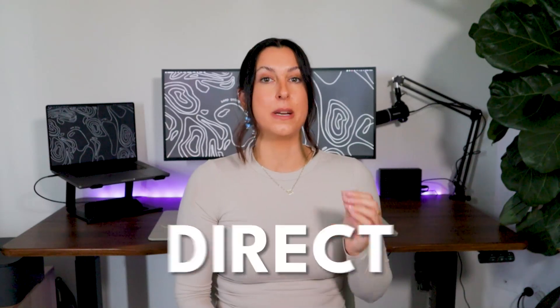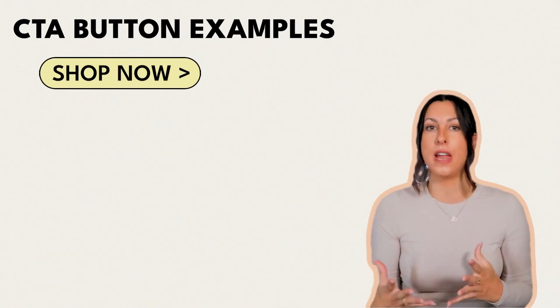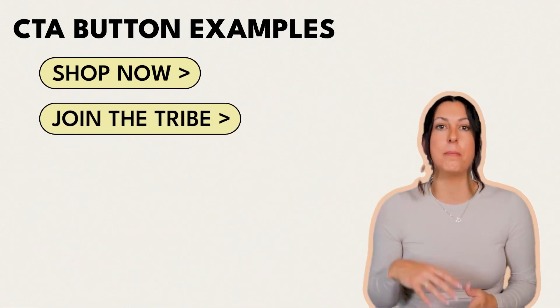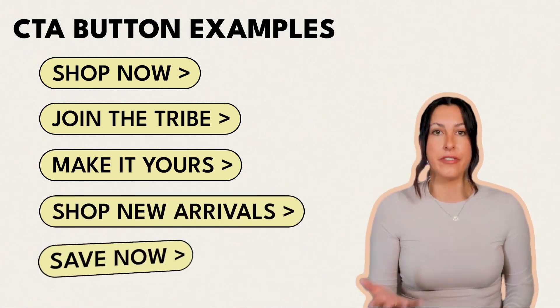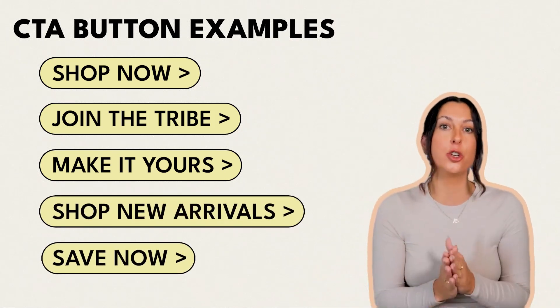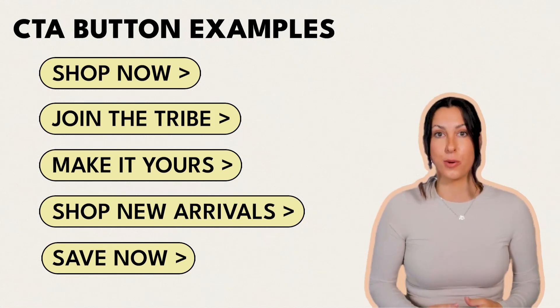The copy on your CTA also needs to be direct and actionable, and it has to match your brand voice. Here are some examples: shop or shop now — which is honestly the most common — join the tribe, make it yours, shop new arrivals, save now. The list goes on, and you could probably save quite a few emails to get some inspiration.